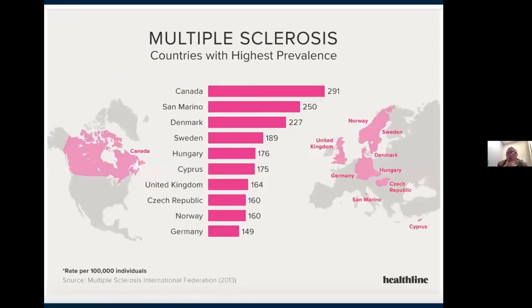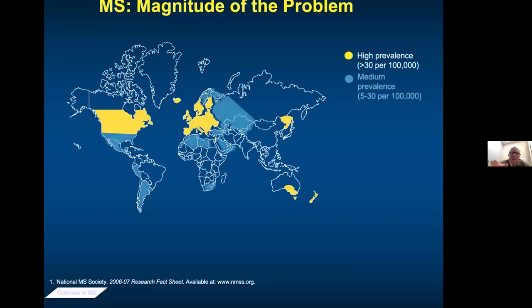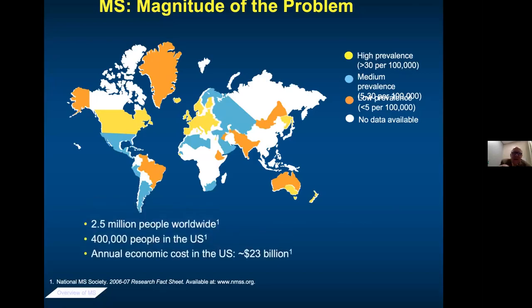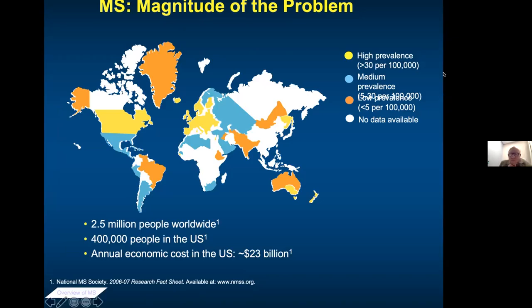Most of multiple sclerosis has a high prevalence in the northern latitudes — Canada, Norway, Denmark, Sweden all have very high prevalence. Down in New Zealand and Southern Australia, they also have very high prevalence because they're further from the equator, even though they're in the south. It says 2.5 million people have MS worldwide — I think that's probably low. 400,000 in the US — I think it's probably closer to a million. The economic burden is 23 billion per year.